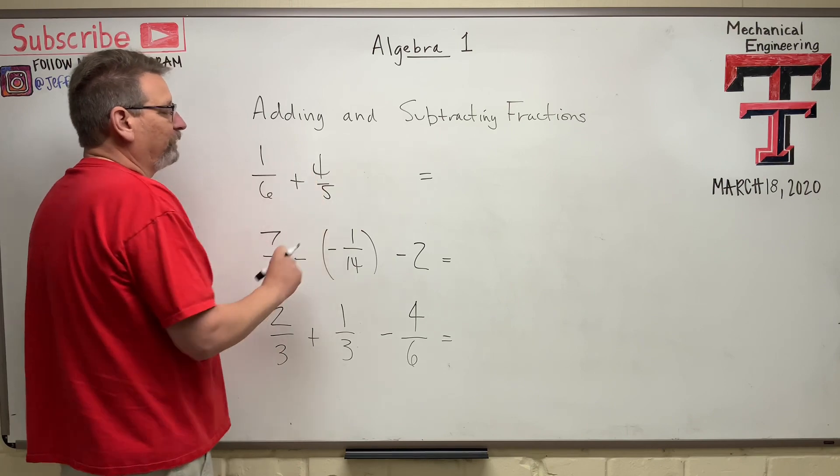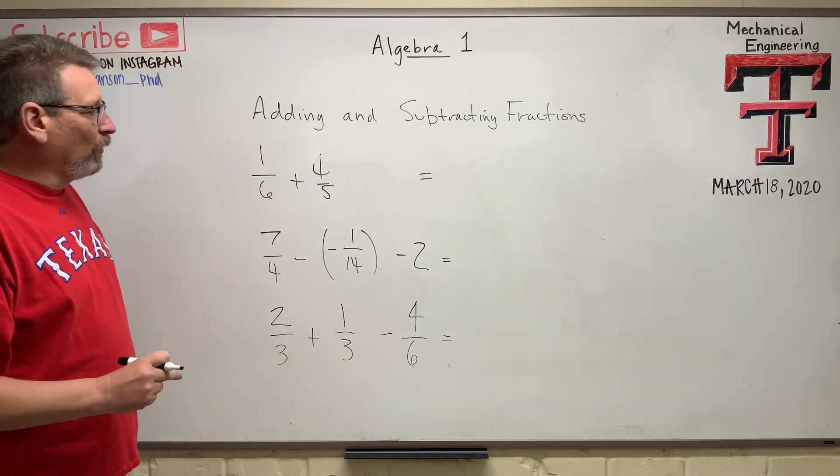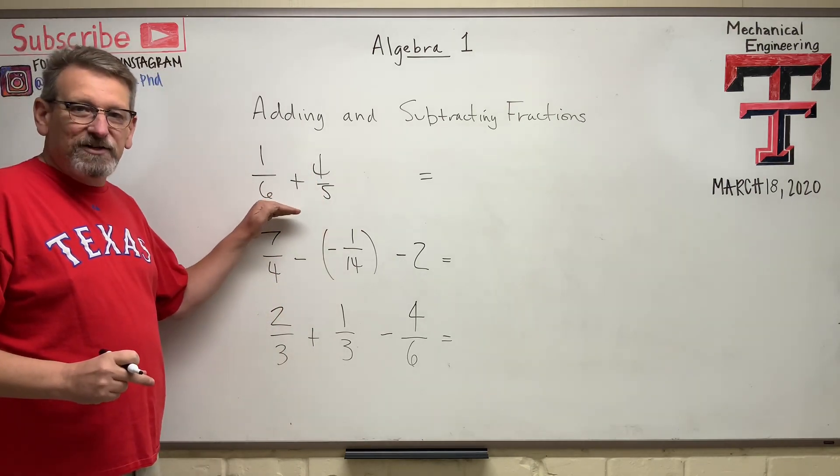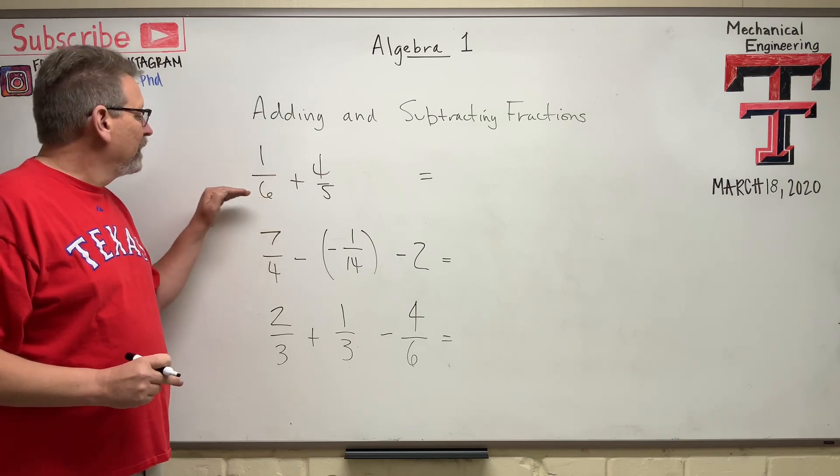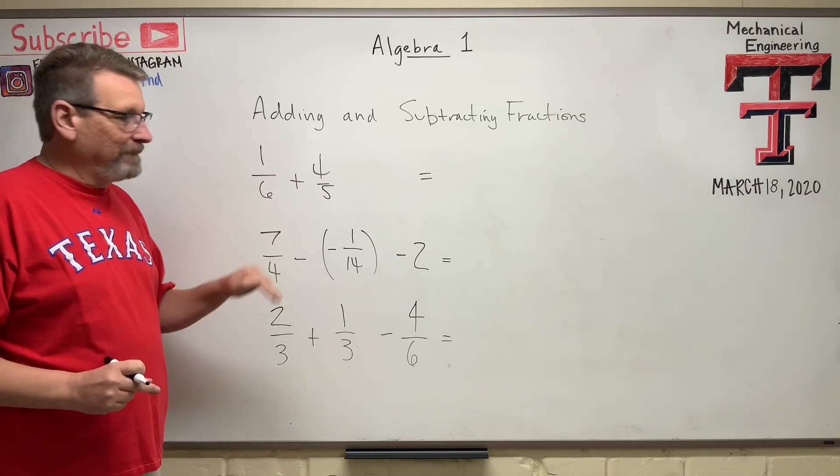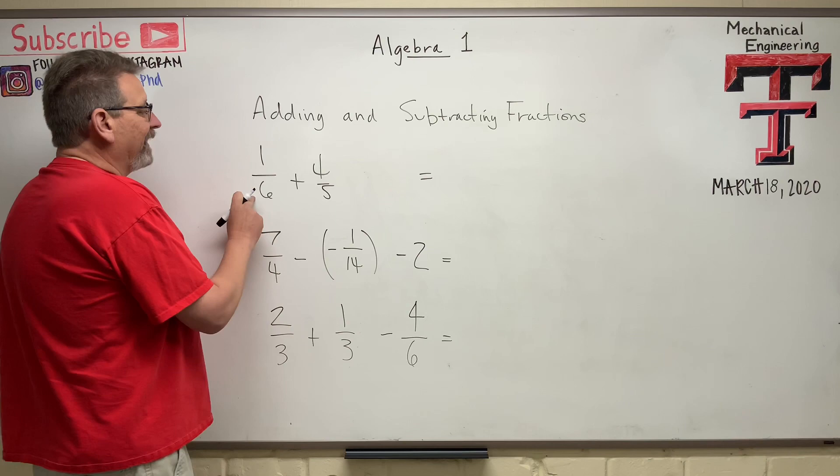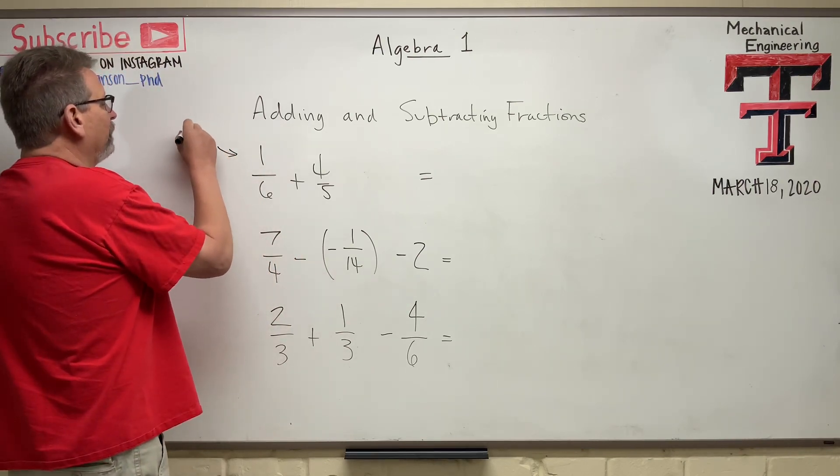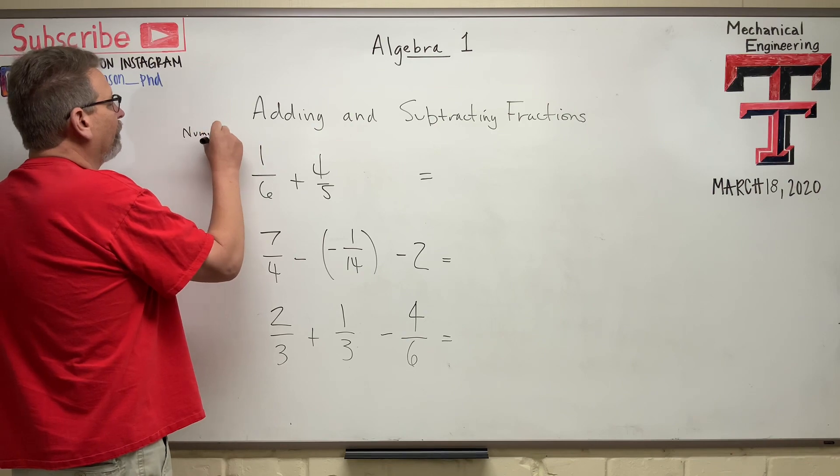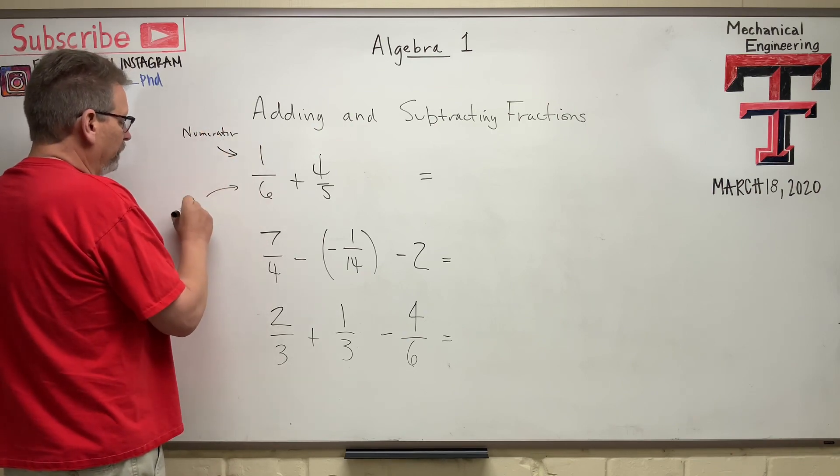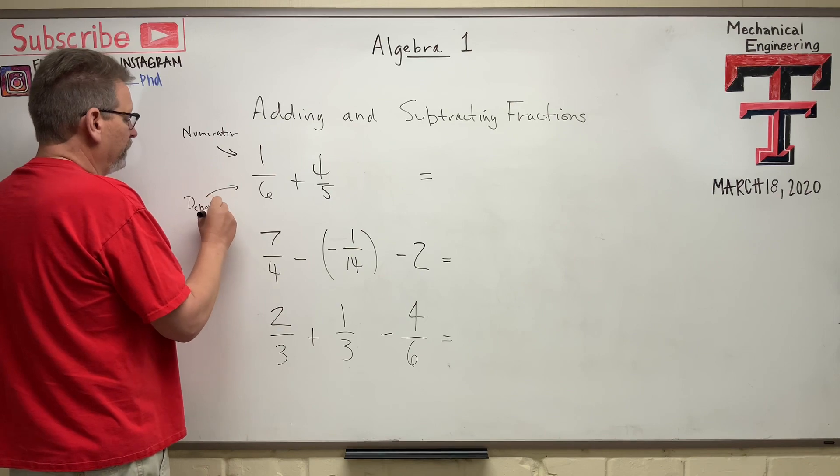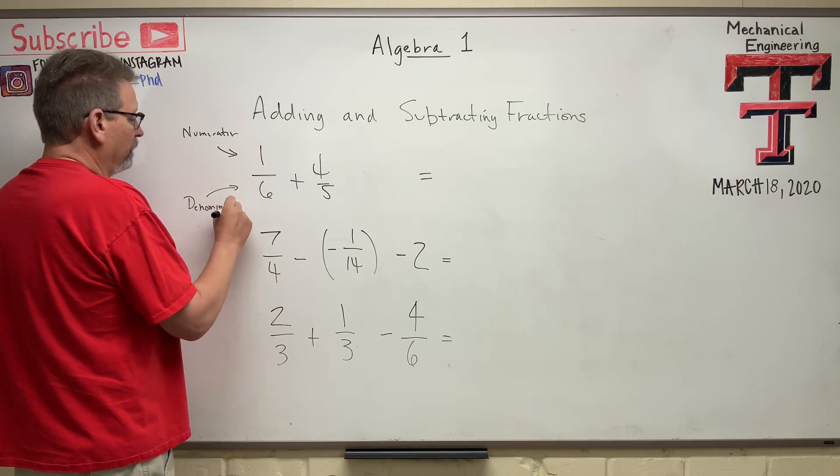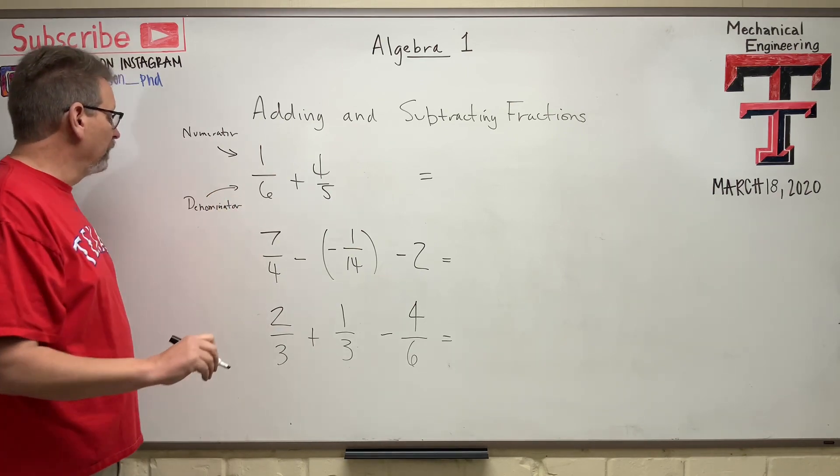And a fraction is just a percentage, a partial of a whole, right? So in this case, we have one-sixth of a whole, plus four-fifths of a whole. The top up here is called the numerator, and the bottom is called the denominator. Sounds like a monster truck, doesn't it? Everybody watch for the denominator.